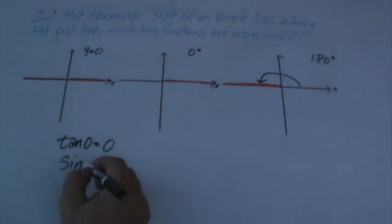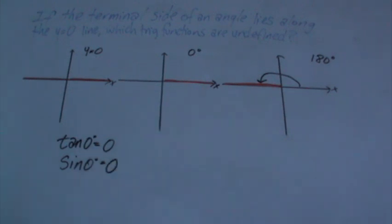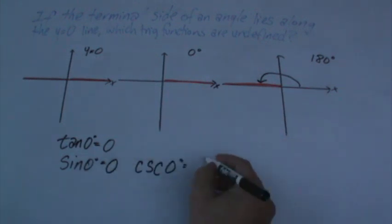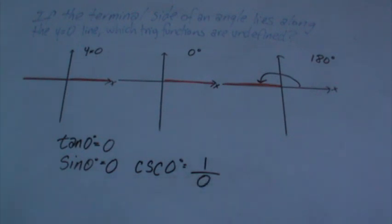So what is sine of 0 degrees? It's also 0. So what would cosecant be? That would be 1 over 0. And we know any time anything is over 0, then we know that's undefined.